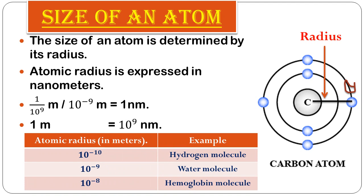A table on textbook page 48 gives examples of atomic radii. The radius of a hydrogen molecule (H₂) is 10⁻¹⁰ meters, the radius of a water molecule (H₂O) is 10⁻⁹ meters, and the radius of hemoglobin is 10⁻⁸ meters. The radius is measured from the nucleus to the outermost shell.